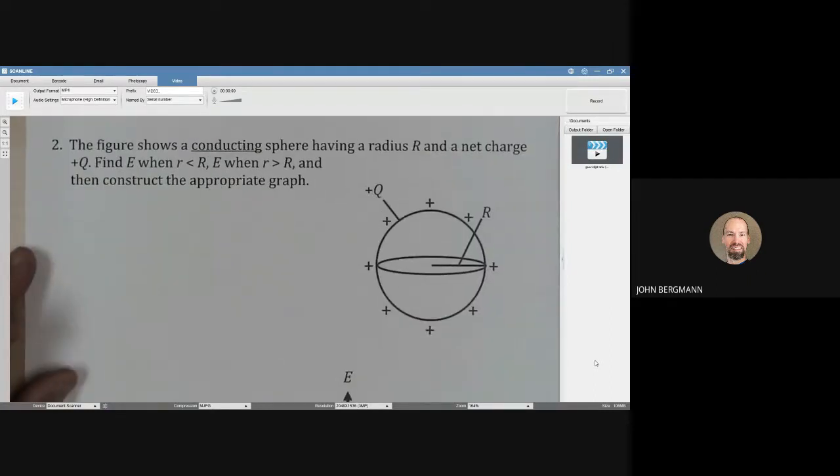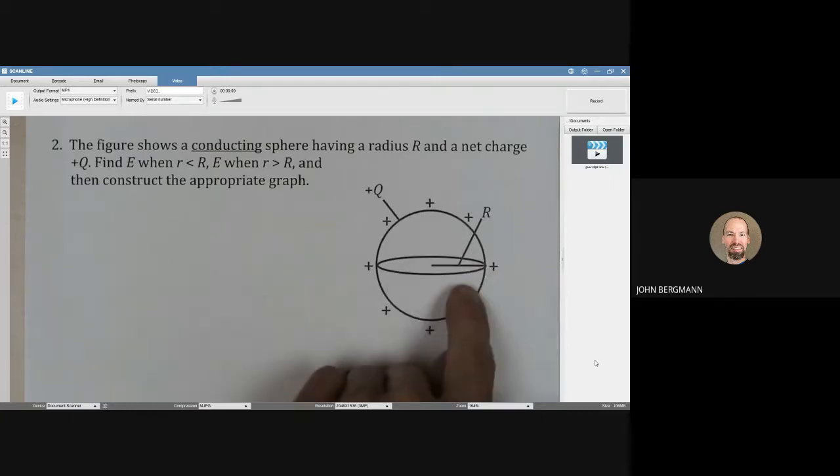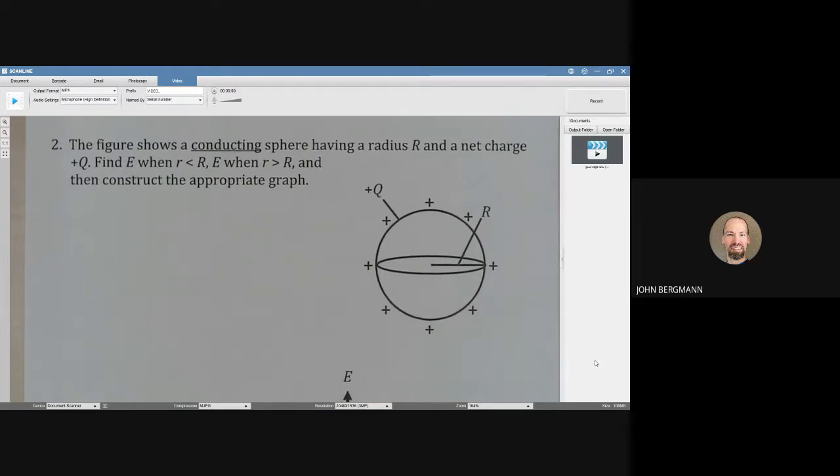This figure shows a conducting sphere, not an insulating sphere. In a previous video, we met an insulating sphere where charge was distributed uniformly throughout the volume of the sphere. That's not the case here.